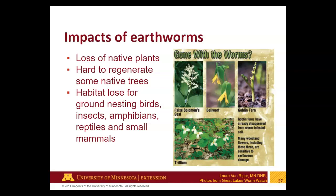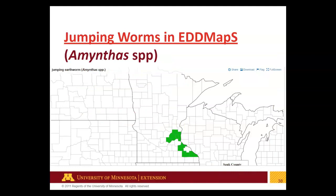The impacts of earthworms also extend to native vegetation loss, difficulty regenerating some native trees, and habitat loss for ground-nesting birds, insects, amphibians, reptiles, and small mammals — a really important cascading impact. This map from October 2019 shows the known distribution of jumping worms by county level. We're starting to see more infestations, and this map has changed quite significantly from a year ago — these worms are on the move.